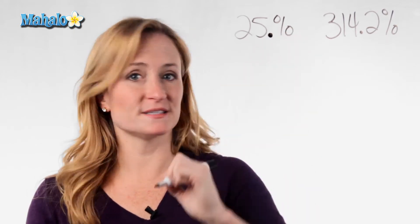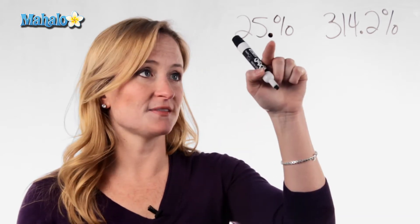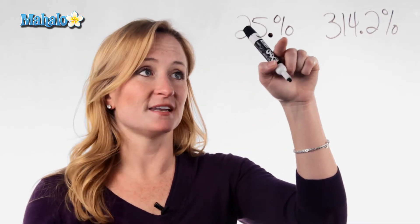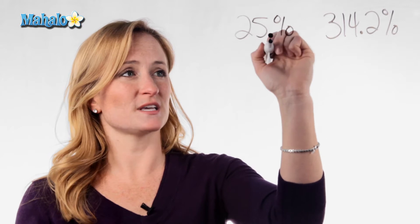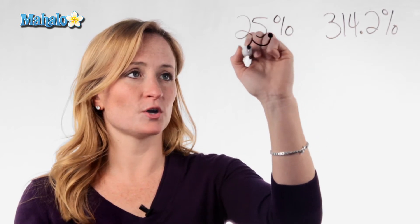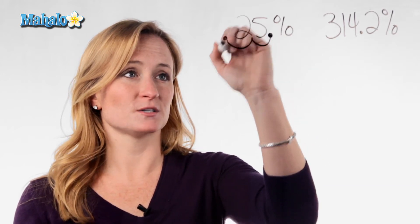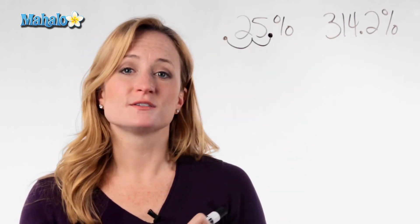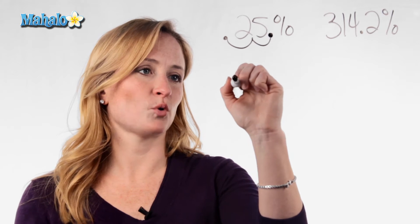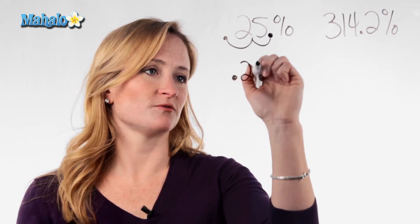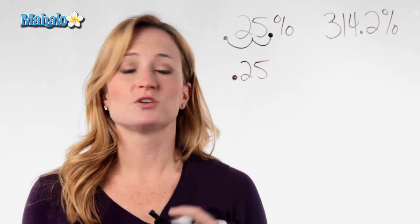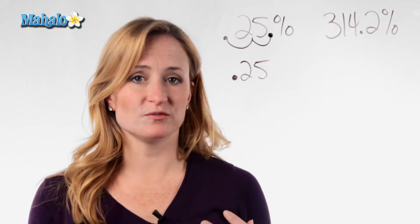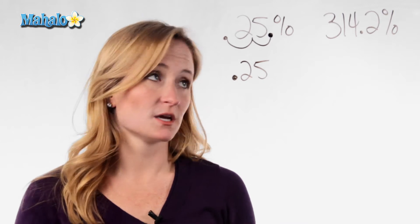It's always there. If it's not shown, it's at the very end of the number — so stick it in there. Then in order to convert to a decimal, get rid of that percentage sign. We need to move this over twice, two times. So 25% becomes .25. You're always going to move the decimal over twice.